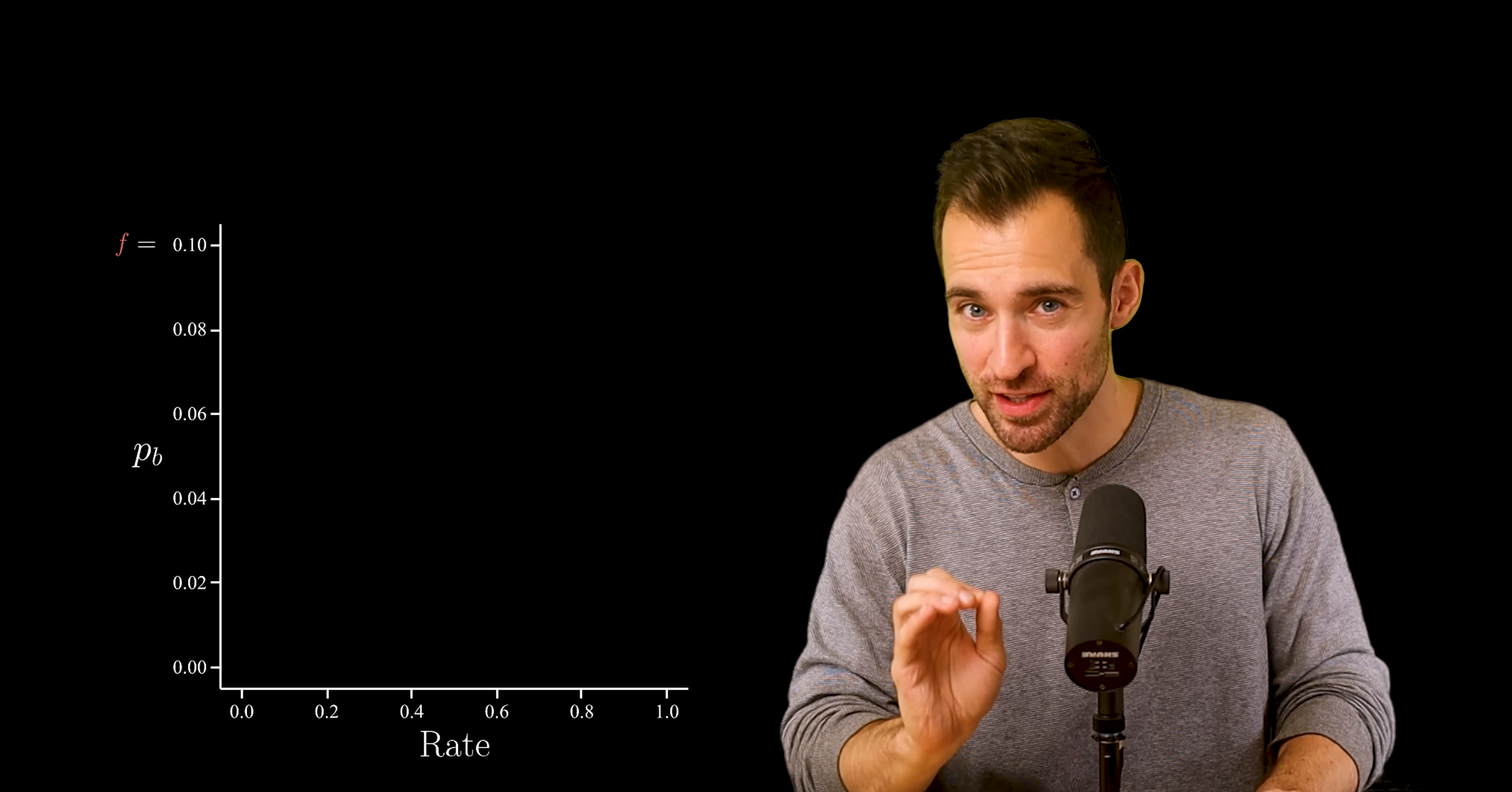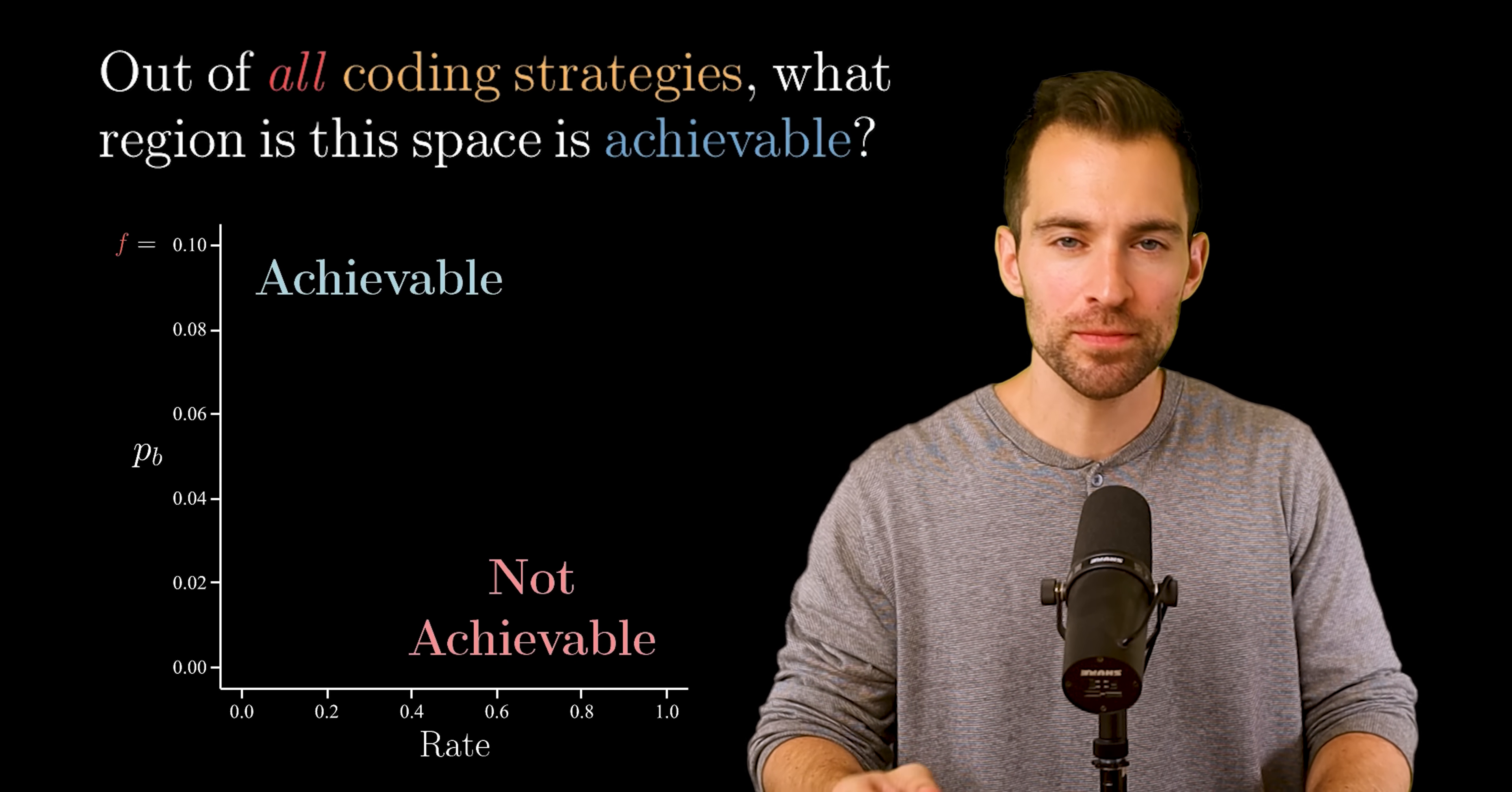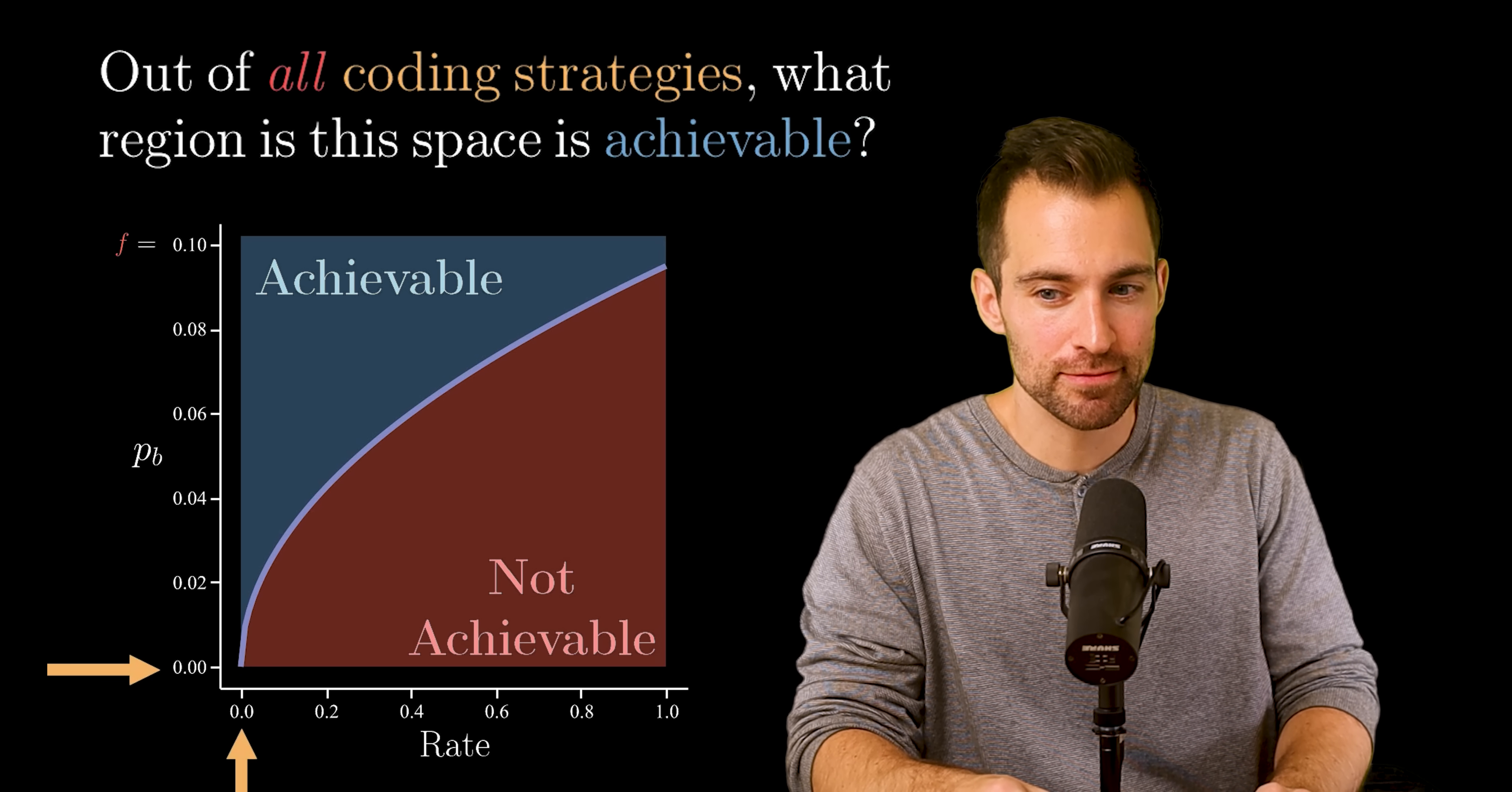Now here's the literal trillion-dollar question. Out of all coding strategies, what region in this space is achievable? That sounds hard. We need to consider all possible coding strategies. Damn. Well, here's a reasonable idea. Whatever the separation is between achievable and unachievable, it goes through the origin. So maybe it looks like this, or this, or this. Whatever it is, the separation goes through the origin. Meaning if you want an extremely small error probability, you'll need to suffer extremely slow rates. Seems totally obvious, and yet it's totally wrong.